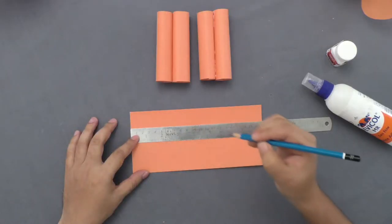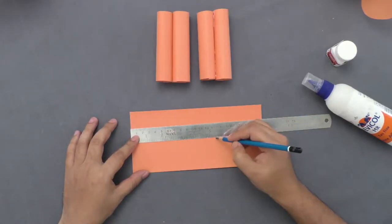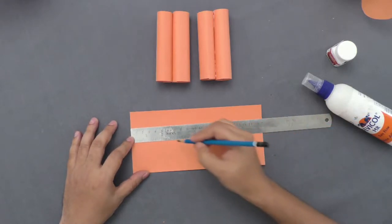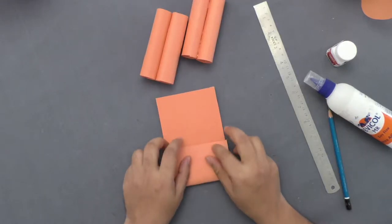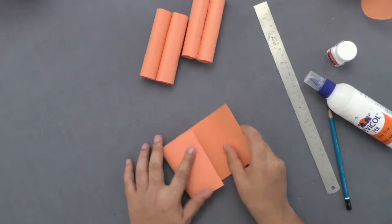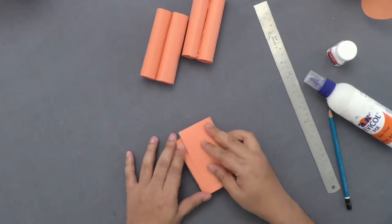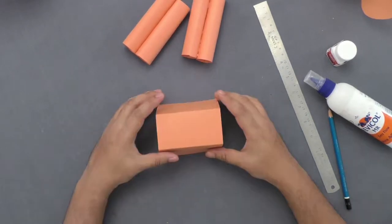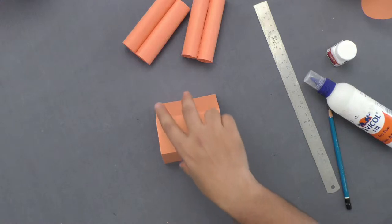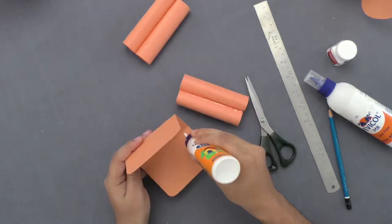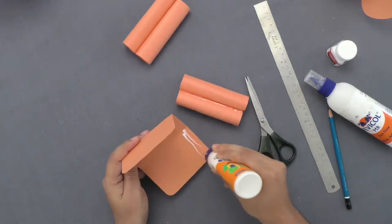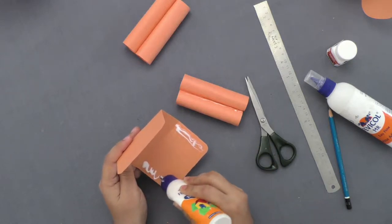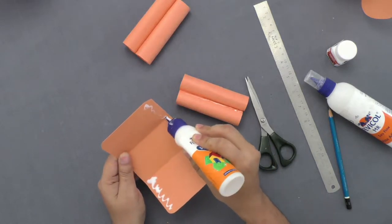Using a scissor, cut out a rectangular piece from a chart paper. Use your scale to mold it into a U-clip shape. Now place the pairs of the cylinders inside the U-clip shaped holder and paste using adhesive.